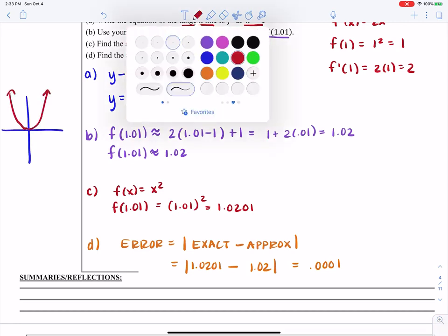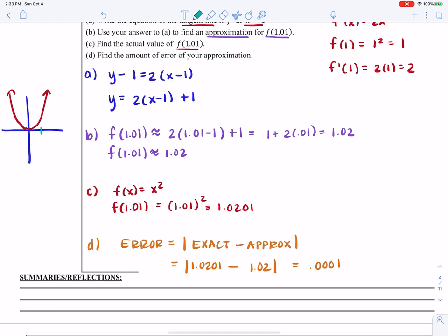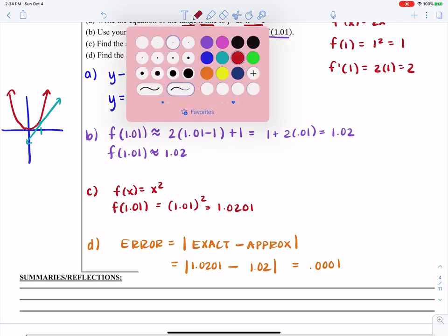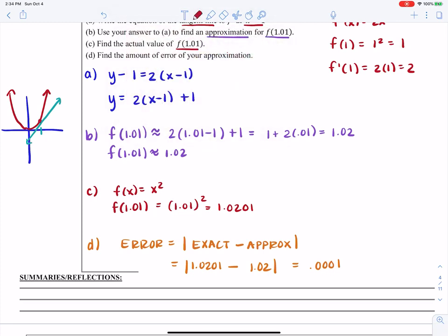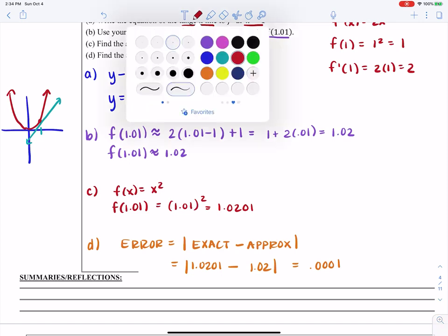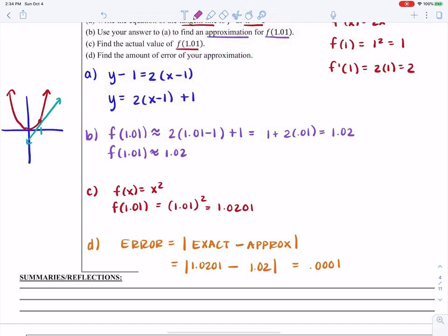The exact value was 1.0201. Our approximated value was 1.02. And we can find we're off by 0.0001. Now obviously that's not a lot because we've picked a value on this function that's pretty close to the actual original x value. So what you've done is we have the function y equals x squared. We went to x equals 1 right here and we built a tangent line.